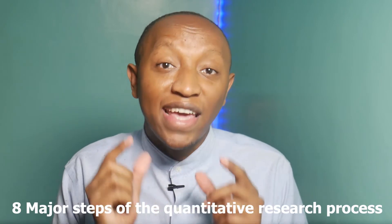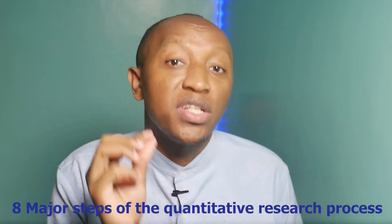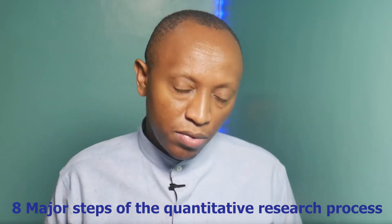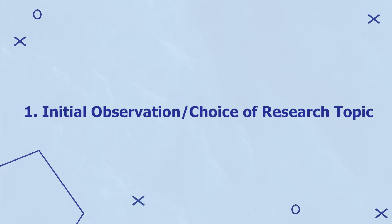Here are eight significant steps of the quantitative research process. Step number one: initial observation or choice of research topic.